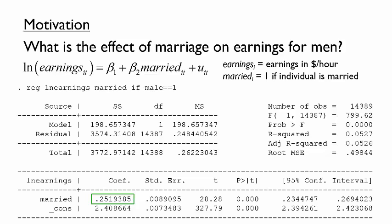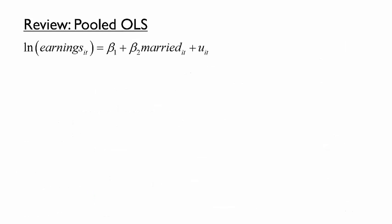The coefficient told us that married men earn 25% more than unmarried men. But we also raised a concern: does it make sense to use OLS when we have a panel or longitudinal data set? Recall that we said we were using pooled OLS when we apply ordinary least squares while disregarding the panel nature of the data set.